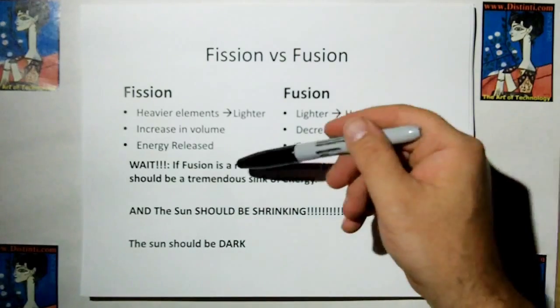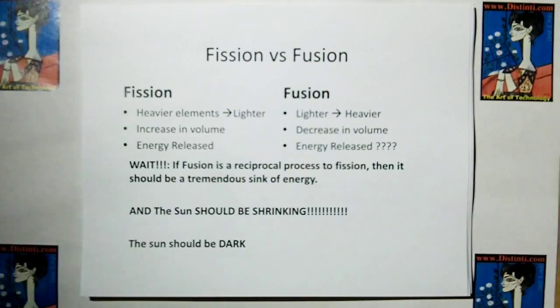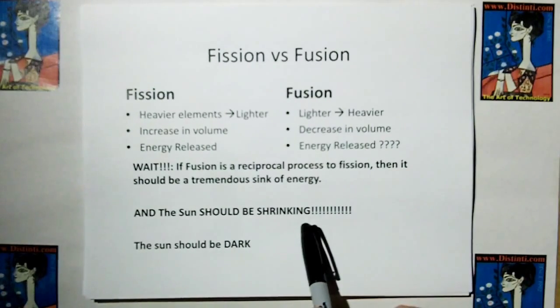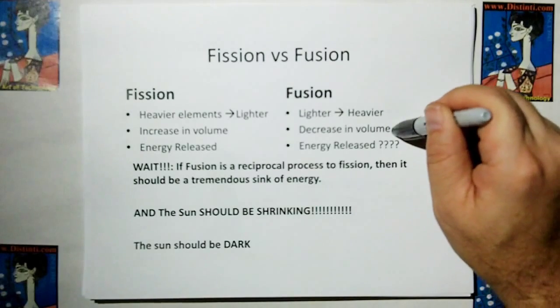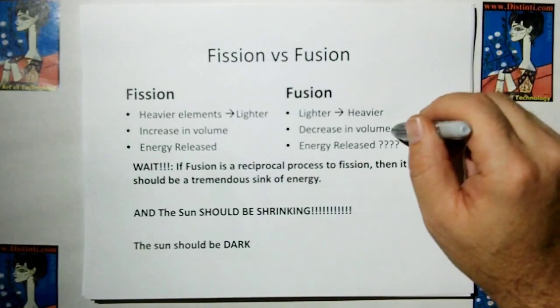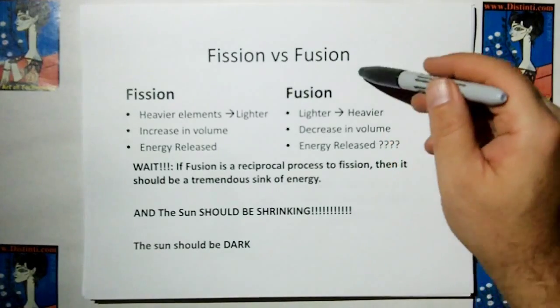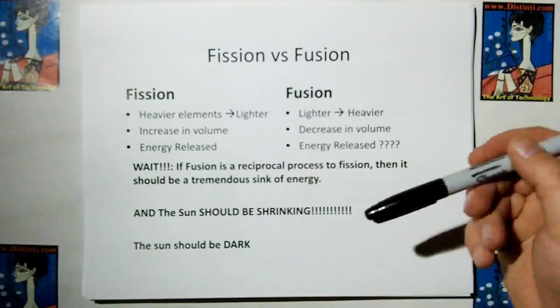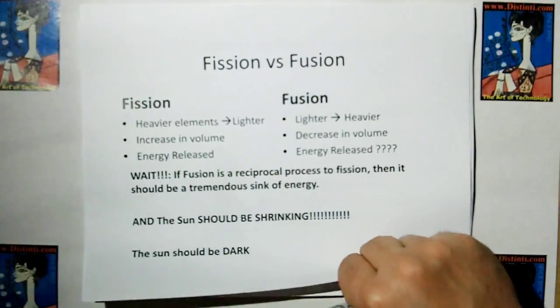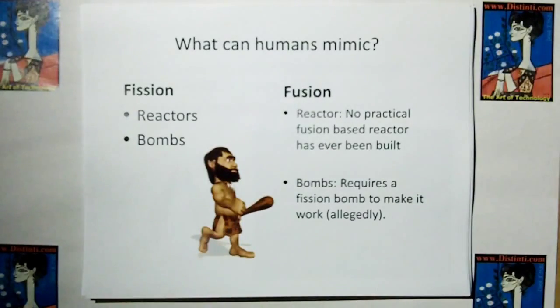If fusion is a reciprocal process, it should be a tremendous sink of energy, not a release of energy. And the sun should be shrinking because it does come with that decrease in volume, a massive decrease in volume when you fuse heavier and heavier elements. And so if the sun is pure fusion, it should be dark and shrinking. It just doesn't make any sense.